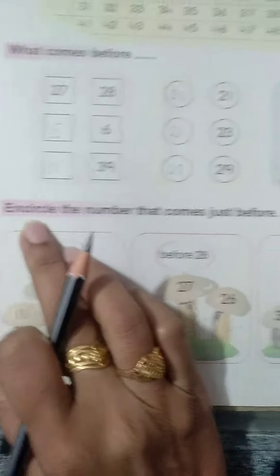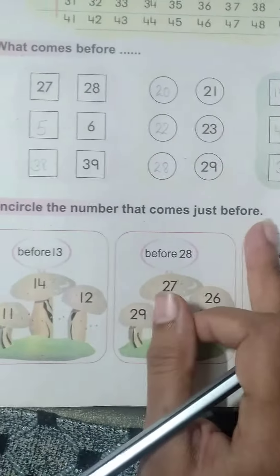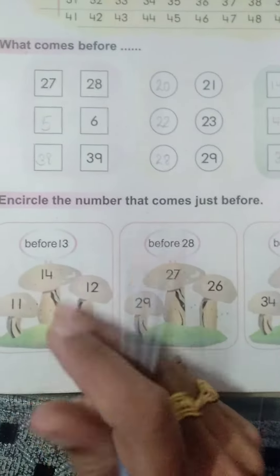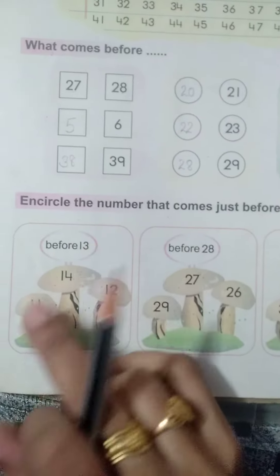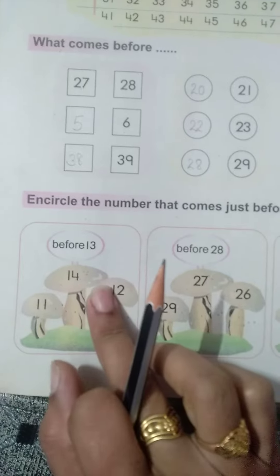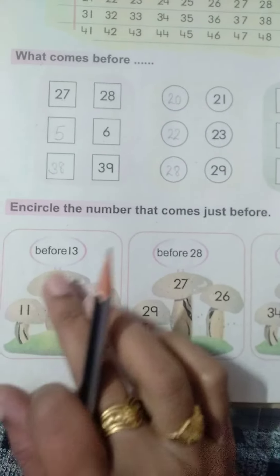And the next question is encircle the number that comes just before. You have given the number and you have given 3 options. You have to circle that number that comes just before this. Okay.